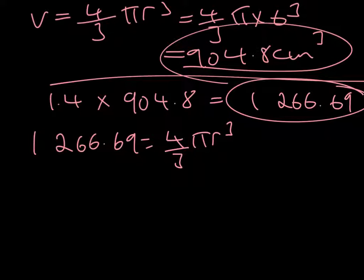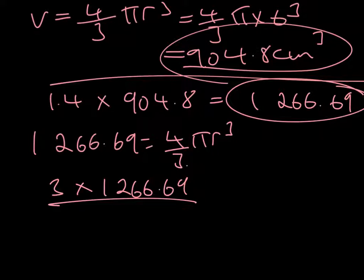We can multiply both sides by 3, so we're going to have 3 multiplied by 1,266.69, and we're going to divide that by 4π. That's going to give us a value for r³ which works out at 302.4.